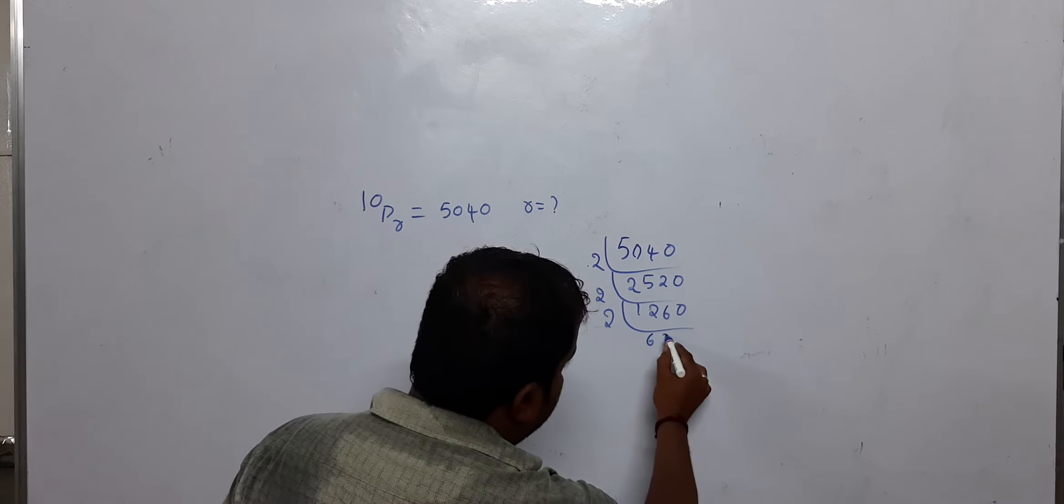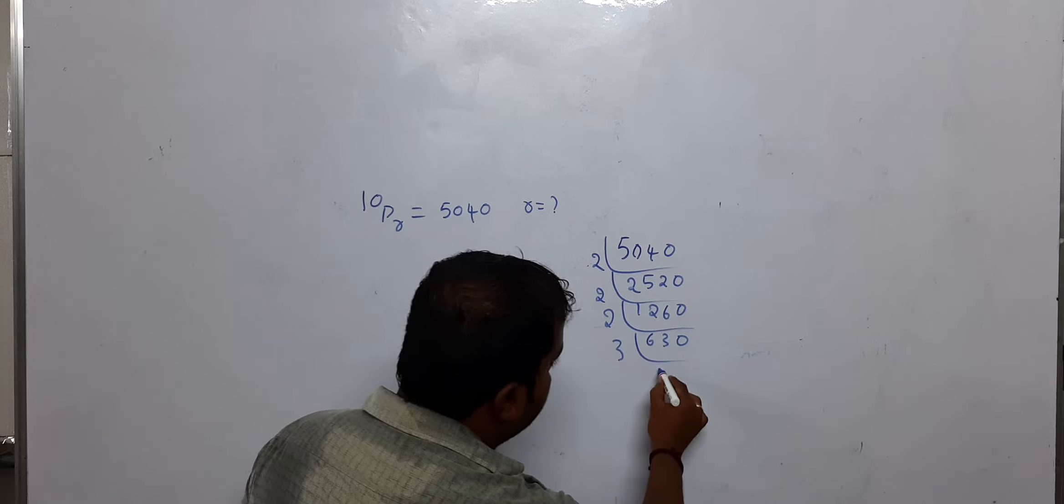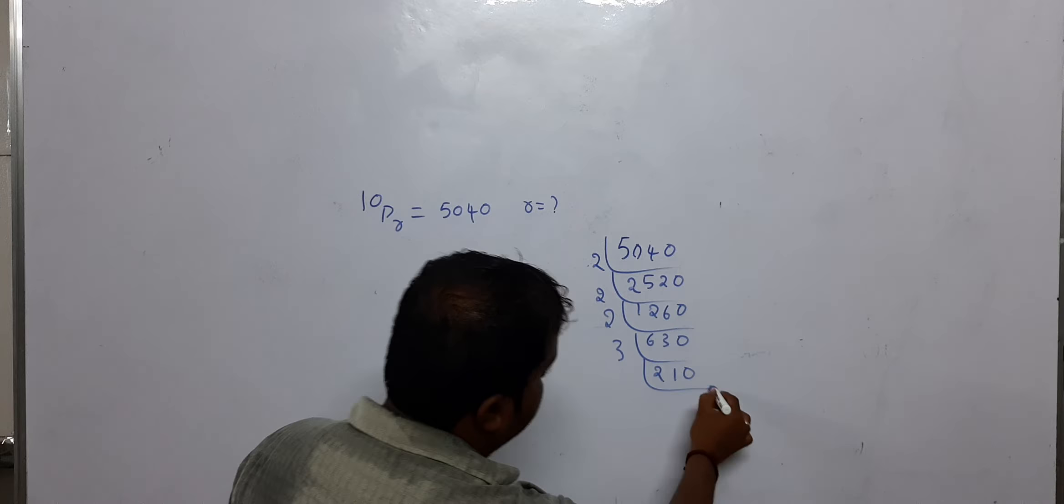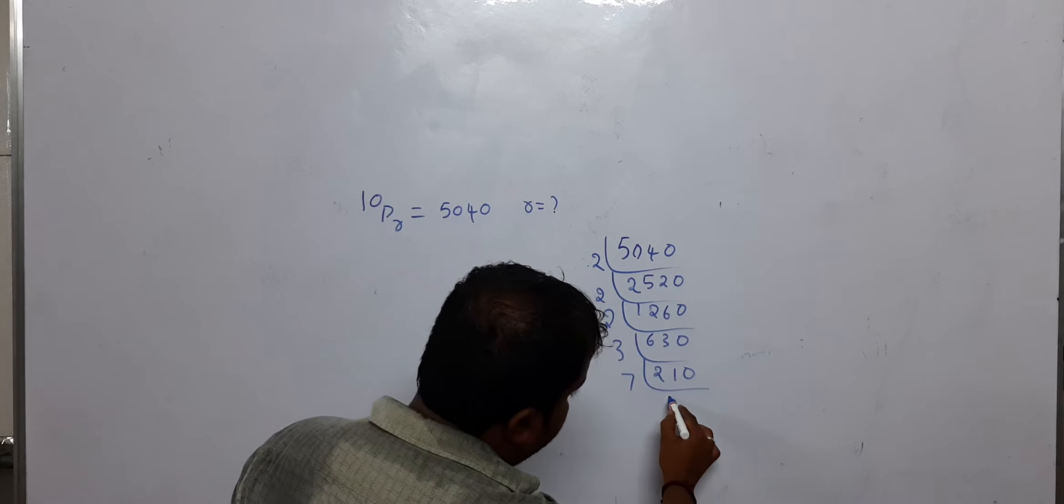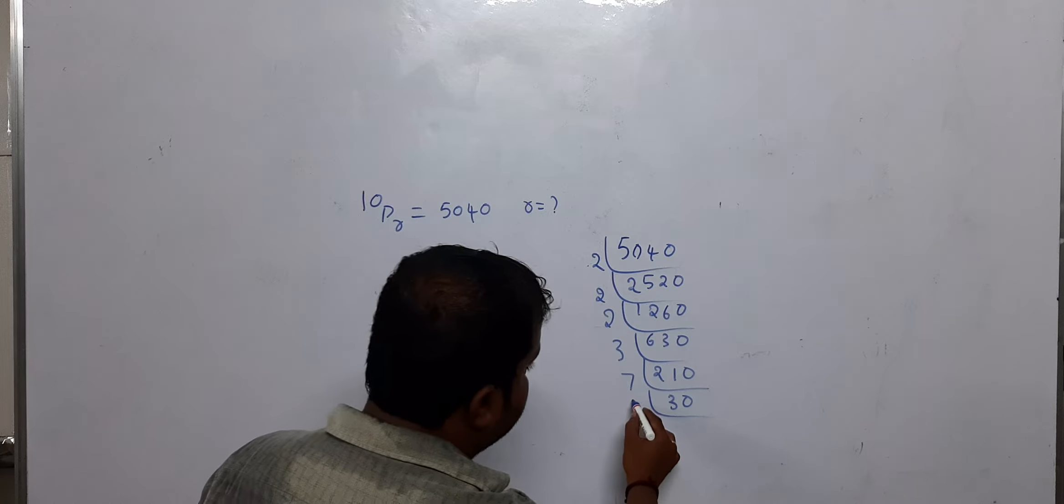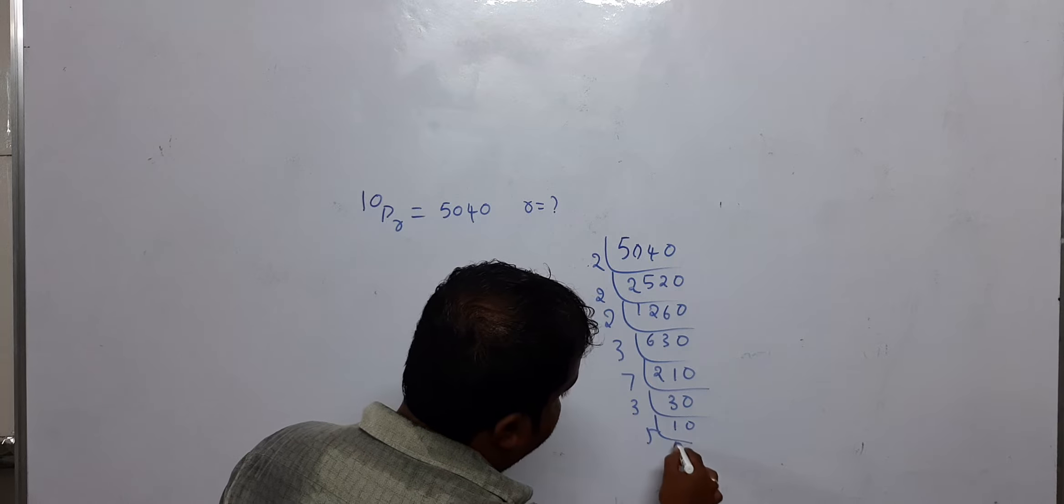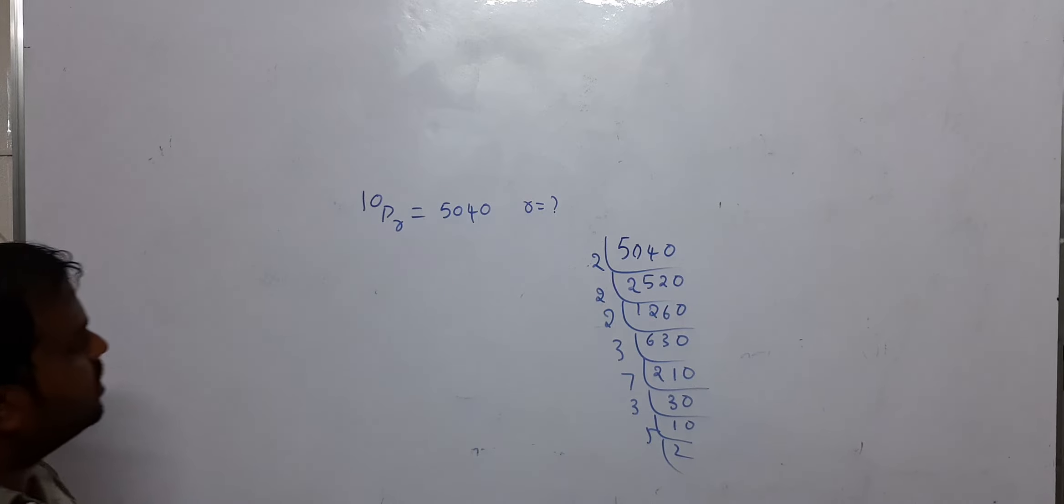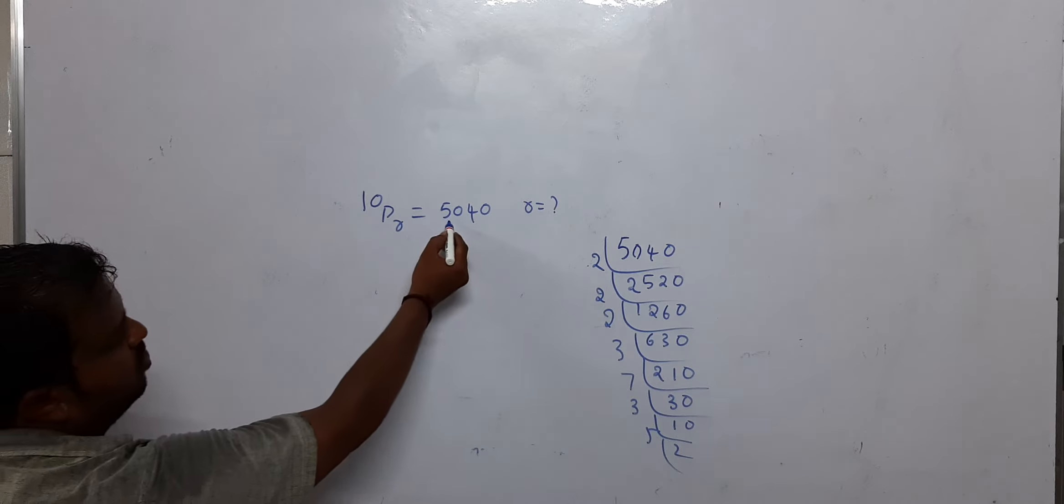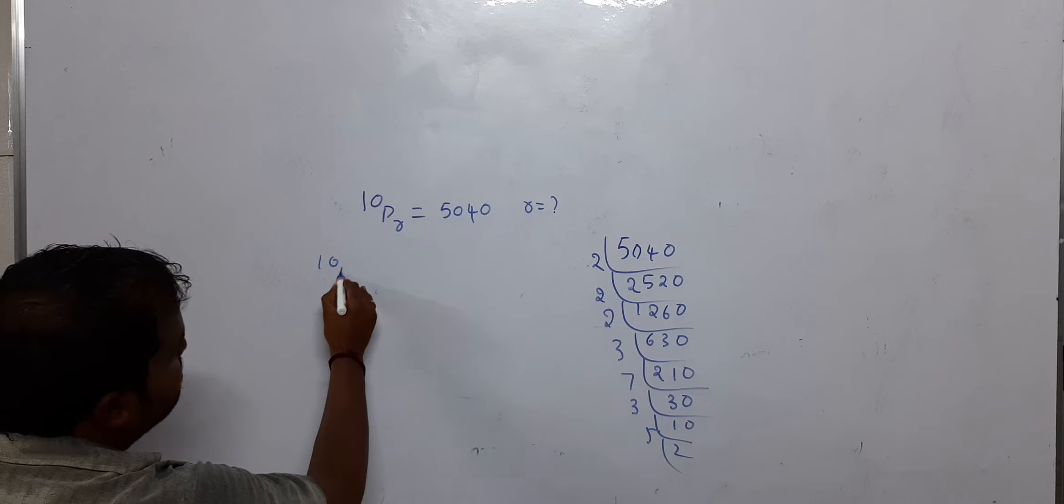Continuing: 1260 divided by 2 equals 630, divided by 2 equals 315, divided by 3 equals 105, divided by 3 equals 35, divided by 5 equals 7, divided by 7 equals 1. So 5040 equals 2 times 2 times 2 times 2 times 3 times 3 times 5 times 7.